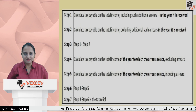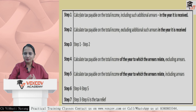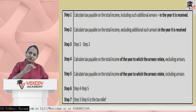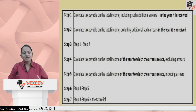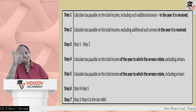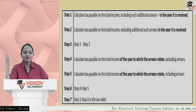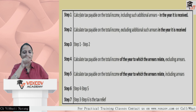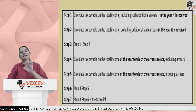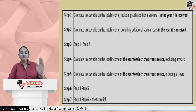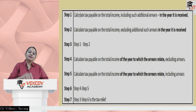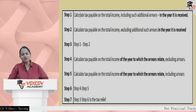Continuing the seven steps for Section 89 relief: Step 3 is the difference between Step 1 and Step 2. Steps 4 and 5 involve calculating tax in the year to which the arrears relate — once including the arrears and once excluding them. Step 6 is the difference between those two. Step 7: deduct Step 6 from Step 3 to get the tax relief. This ensures the tax burden reflects what it would have been had the income been received in the correct year.